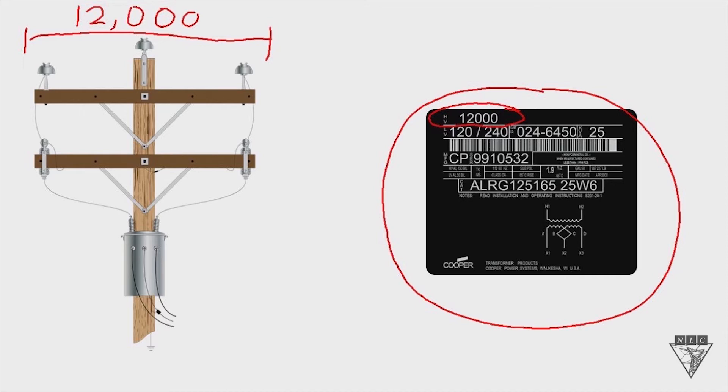Now, the important thing about the number, the 12,000 volts on your nameplate, that's what the insulation on the primary coil of the transformer is rated for. So if you go above 12,000 volts, you're going to damage the insulation of the transformer, and it's going to make it short circuit.